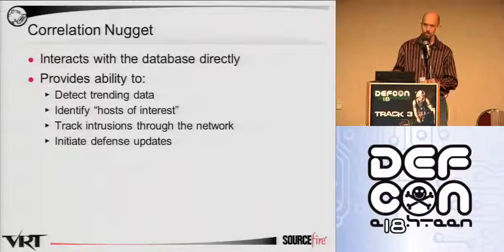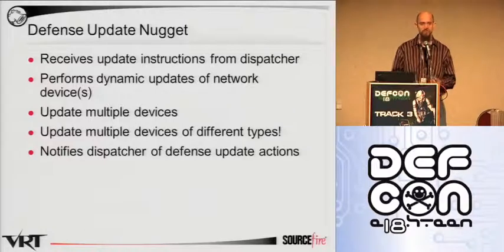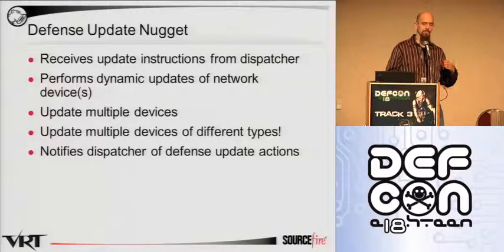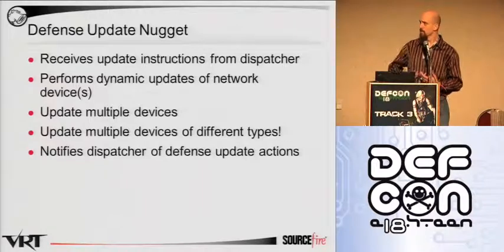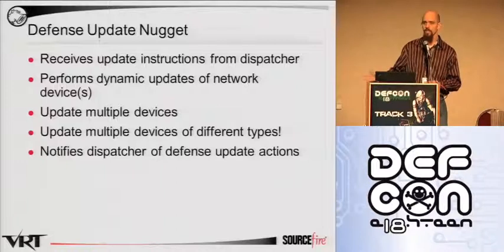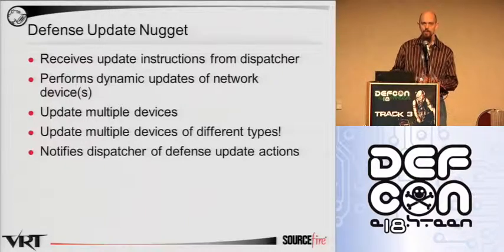A correlation nugget can also talk to a defense update nugget. Defense update nuggets are really cool because since they're part of the Razorback system, they are completely vendor-agnostic. You can write a nugget that updates multiple devices at once across multiple vendors. An example I love: when you realize someone is coming in from the outside trying to get through your network, you could use a defense update nugget to modify your router, redirect them to a honeynet, and start up some daemon loggers to log all their activities. They'll think they're going through your network doing terrible stuff, while you're actually analyzing what they're doing, gathering all their tools, keeping them there longer without doing any actual damage.